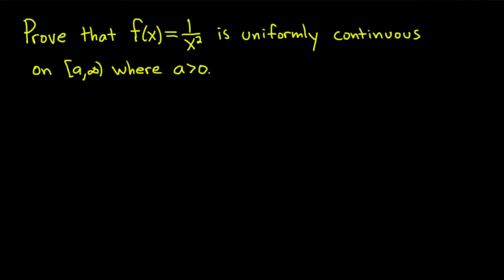In this video we're going to do a careful proof. We're going to prove that the function f of x equals 1 over x squared is uniformly continuous on the set a to infinity, where a is a positive number.